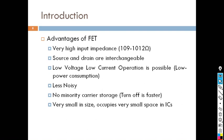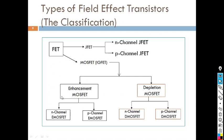FETs are classified as junction field effect transistor and MOSFET. In junction field effect transistors we have two types: N channel and P channel JFET. In MOSFET we have two types: enhancement and depletion. Enhancement has N channel E-MOSFET and P channel E-MOSFET. Depletion has N channel D-MOSFET and P channel D-MOSFET. The behavior and characteristics of all of these we are going to study.